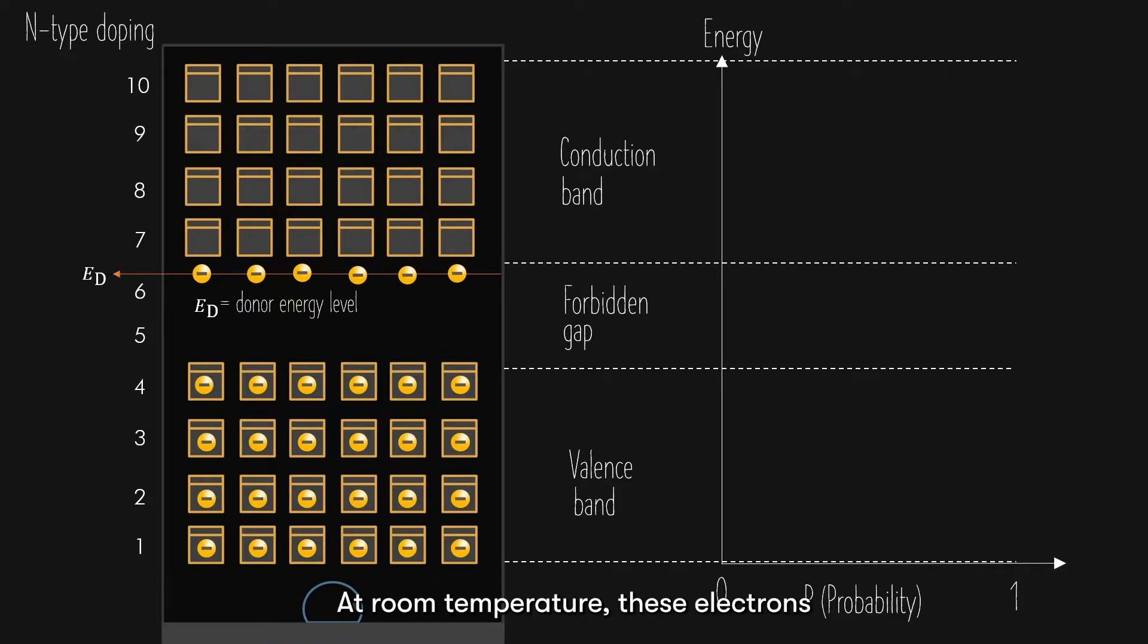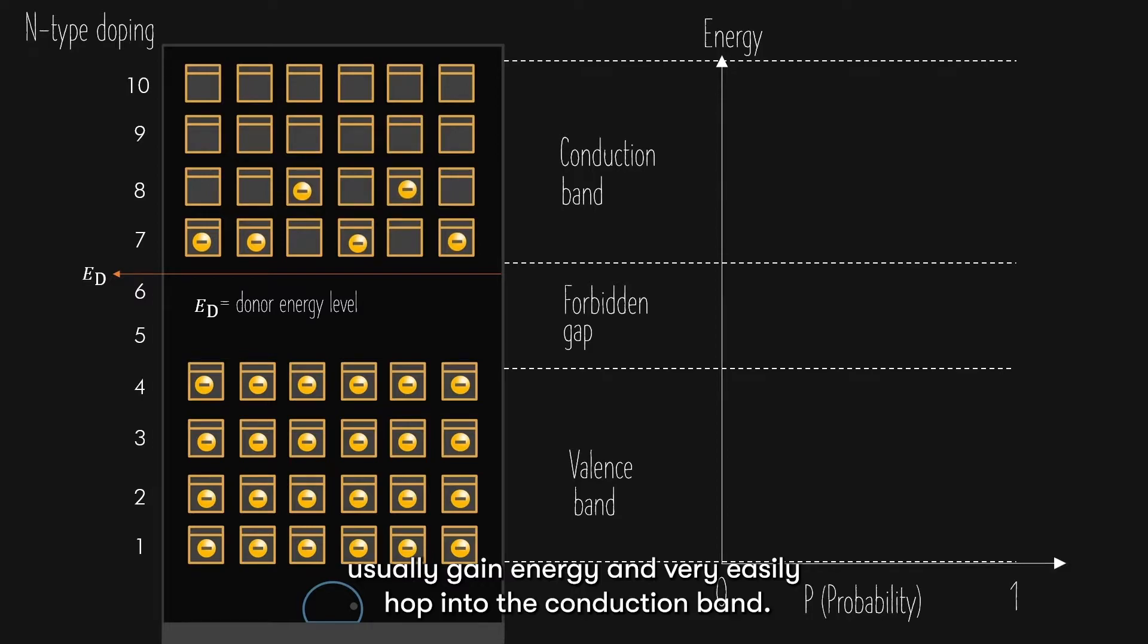At room temperature, these electrons usually gain energy and very easily hop into the conduction band. You can see most of the free electrons will hop to the 7th floor, gradually decreasing in number as we go upwards. This is because the higher up you go, the more energy you require to put an electron into that unit. So, the chances of electrons occupying higher energy levels are lesser.